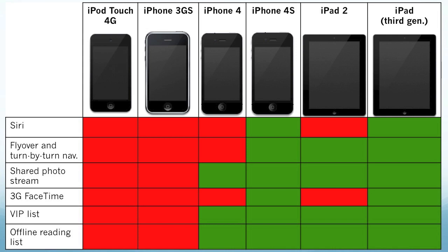VIP list is only for the iPhone 4, the iPhone 4S, the iPad 2, and the third generation iPad. Offline reading list is also only for the iPhone 4, the iPhone 4S, the iPad 2, and the third generation iPad.